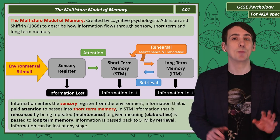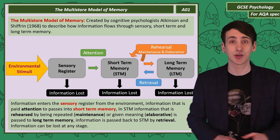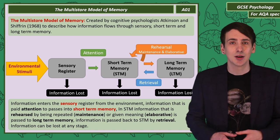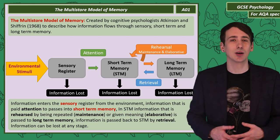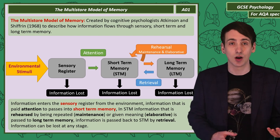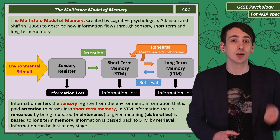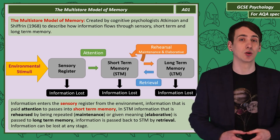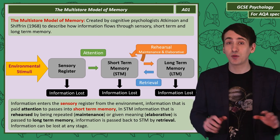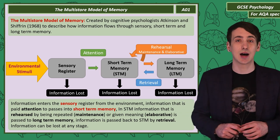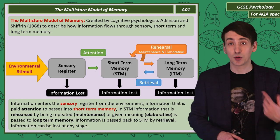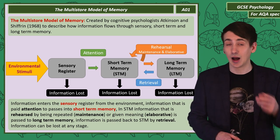You take in a massive amount of sensory information every single second — sight, sound, touch, taste, smells. That all enters your brain, but you don't pay attention to most of it and it's just lost. What you do pay attention to is passed to the next memory store: short-term memory. There it's held onto, but not for long. That information is either lost, or it's processed and then passed to long-term memory. That processing is called rehearsal, and there are two types.